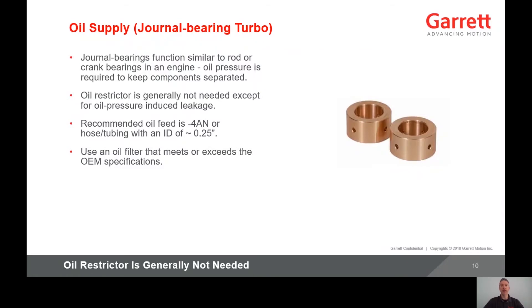The oil supply depends on the bearing system in the turbocharger. There are two types: journal bearing and ball bearing. Journal bearings function similar to rod or crank bearings in an engine, where oil pressure is required to keep the metal components separated. In general, an oil restrictor is not needed for a journal bearing turbo, except for oil pressure induced leakage. The recommended oil feed line is a dash 4AN, or a hose or tube with an ID of a quarter inch.